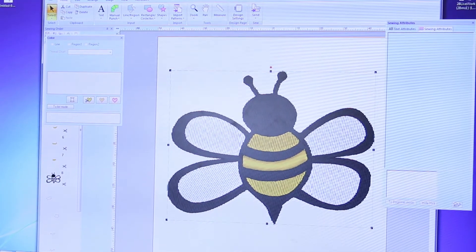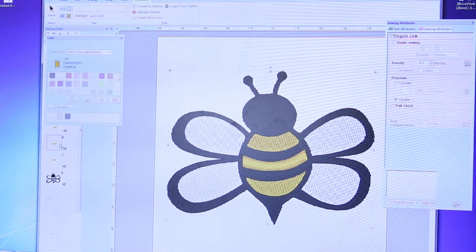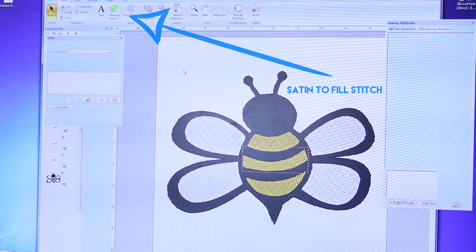Now we will change the type and density of the stitch. Begin by selecting an individual piece of the design and change the stitch from a satin stitch to a fill stitch. Apply this to all parts.